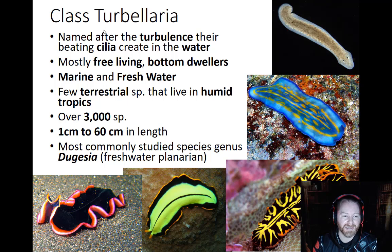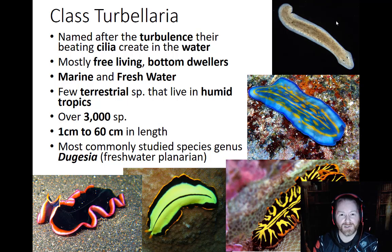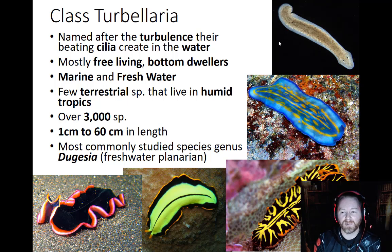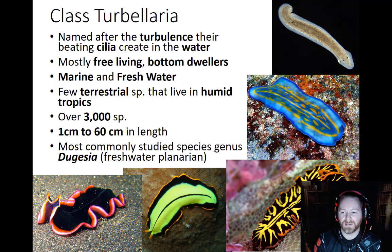The most highly studied individual in Turbellaria is Dugesia, a freshwater planarian you may have looked at with a microscope in school. It is a highly studied species because of its ability for fragmentation — a form of asexual reproduction. If you cut the head off, the head will grow into a body and the body will grow a head, giving you two. You can split them lengthwise and each half will grow back the missing half.